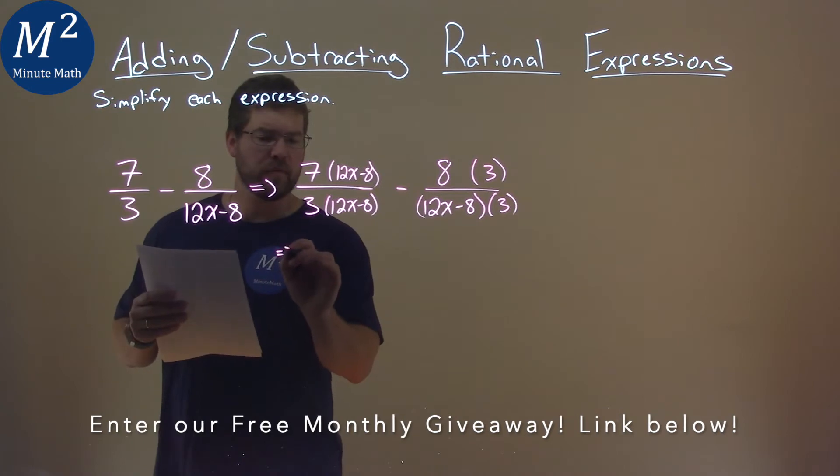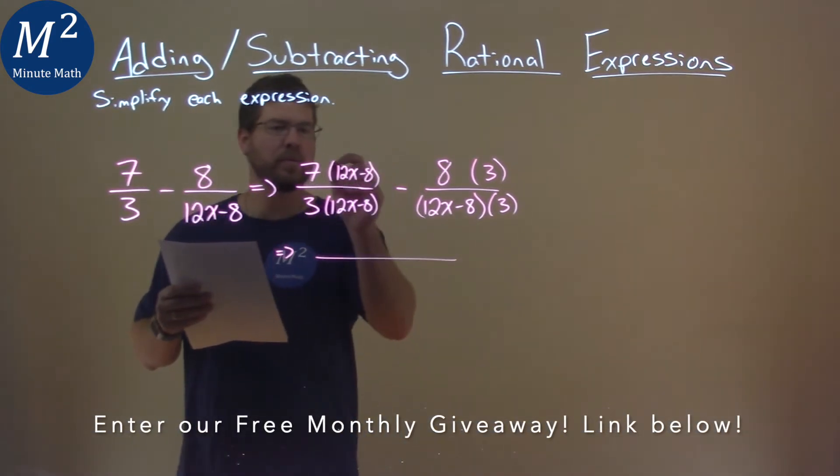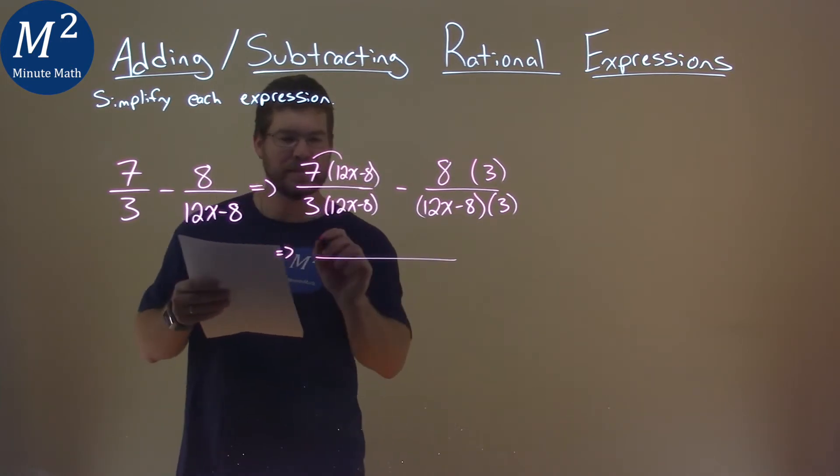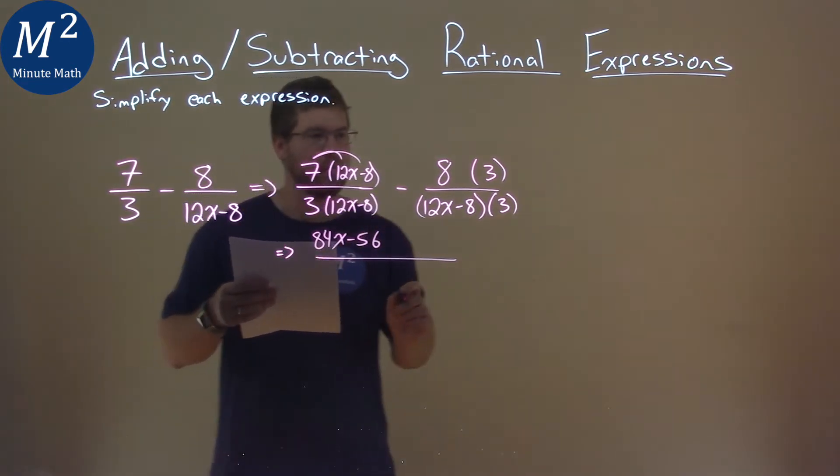Okay, so following my steps, I'm going to multiply this numerator out. 7 times 12x is 84x, and 7 times -8 is -56.